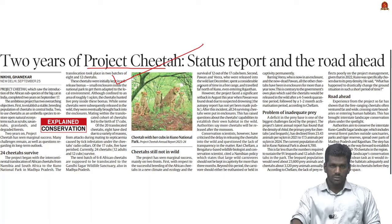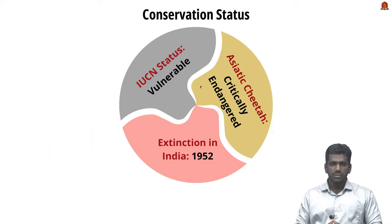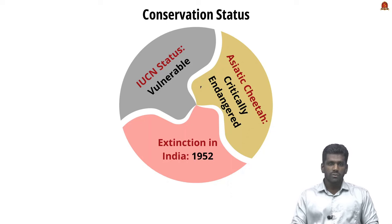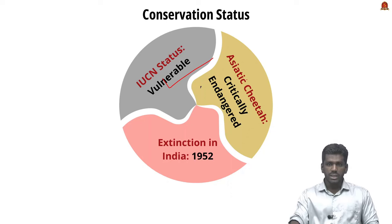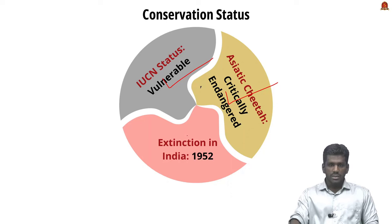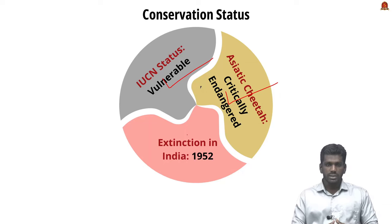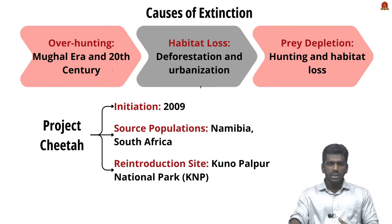There are two main species of cheetah: the African cheetah and the Asiatic cheetah. African cheetahs are listed as vulnerable on the IUCN Red List. Asiatic cheetahs are only present in Iran and are listed as critically endangered. Cheetahs went extinct in India in 1952, and there are several reasons for their extinction.